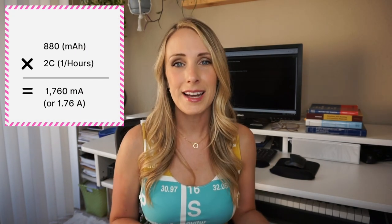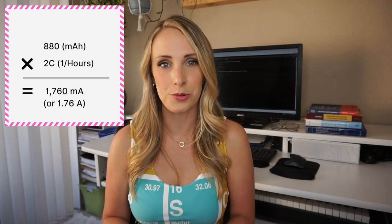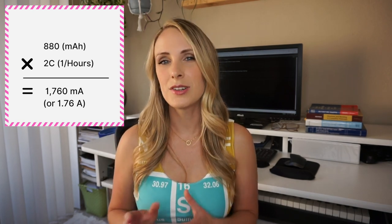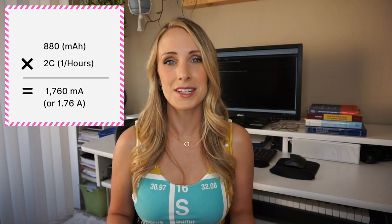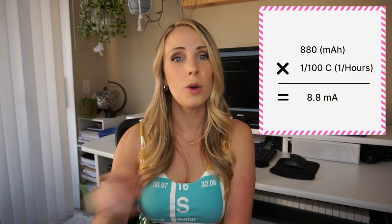Now I know the battery capacity is 880 mAh and I want to charge this battery in half an hour, or at 2C. To calculate the required current: 880 mAh × 2C = 1,760 milliamps, or 1.76 amps. Now if we wanted to take 100 hours to charge the same battery — a rate of C/100 — we would take 880 × (1/100) = 8.8 milliamps. It's not too complicated!